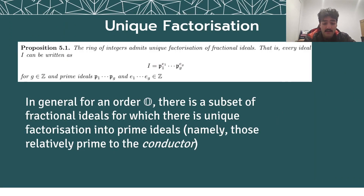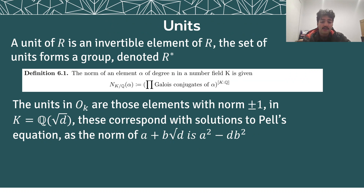An important result in algebraic number theory is that the ring of integers admits unique factorization of fractional ideals. This can be used to solve Pell's equation and has many nice implications. In general, for an order O, there is a subset of fractional ideals for which we have unique factorization. A unit of R is an invertible element of R, and the set of units forms a group, denoted R*.